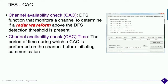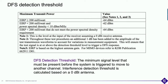The channel availability check time is a period when the AP must listen for those six different kinds of radar pulses. It's based on a DFS detection threshold — the thresholds differ for outdoor versus indoor capabilities and are pretty high. But bottom line: if you detect something above those thresholds, you are not allowed to transmit on those channels and you have to move.